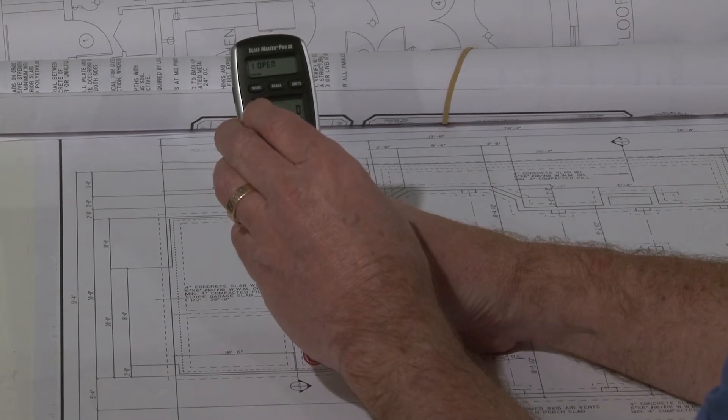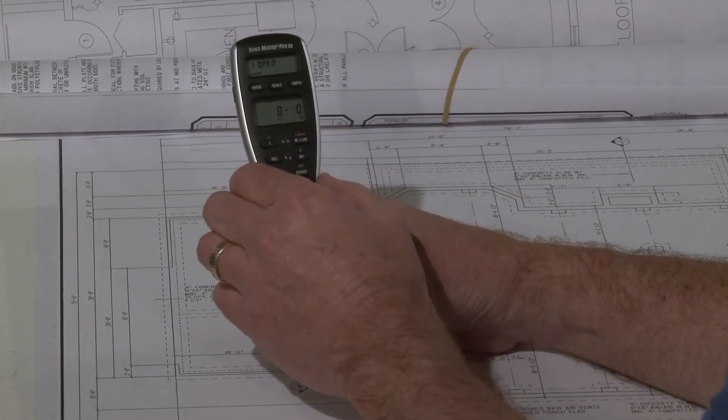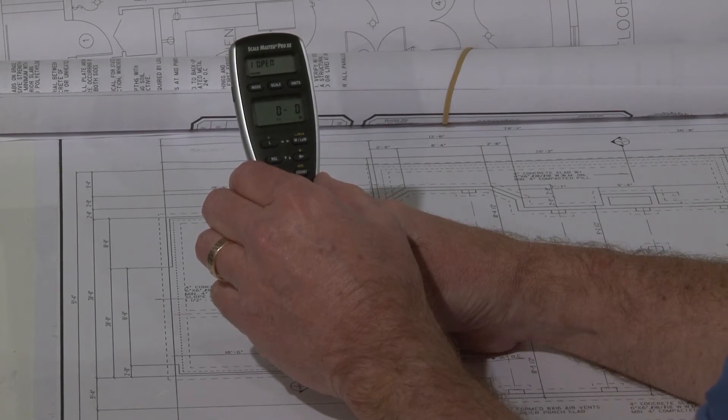And Custom Scale Mode, there's ten custom scale registers in this device. Five for U.S. or Imperial scales and five for Metric scales for when you know a plan is not to scale.